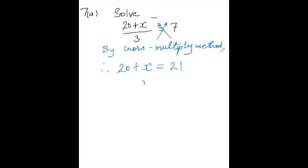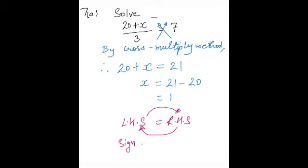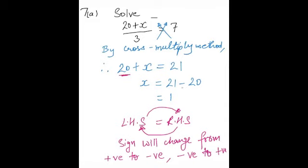If we do that, therefore 20 plus x is equal to 7 times 3, which is 21. And x should be equal to 21 minus 20, which is 1. Anything which moves from left to right or right to left, the sign will change from positive to negative and negative to positive. In this case, 20 was positive, so when it moves to the right hand side it becomes minus 20.